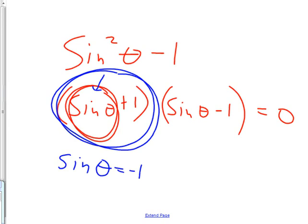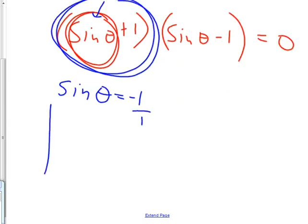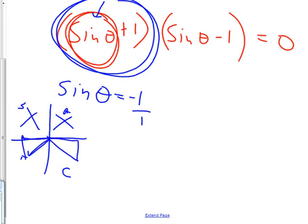Remember those? You go over 1 on the unit circle and ask what quadrant am I in where sine is negative. All Students Take Calc — sine is positive in quadrants 1 and 2, so it must be negative down in quadrants 3 or 4, giving two answers.